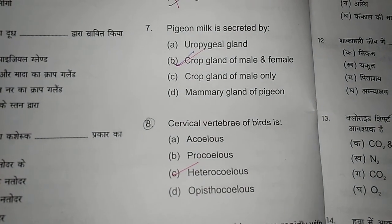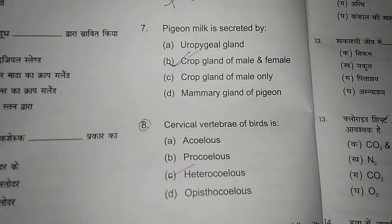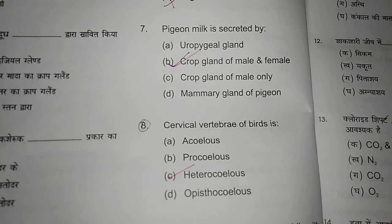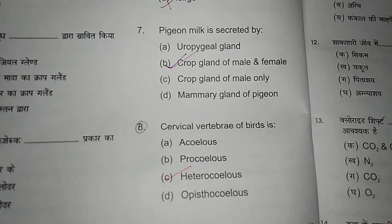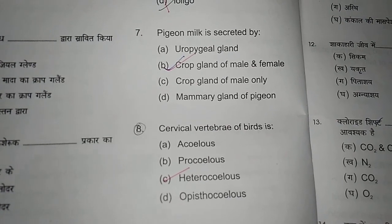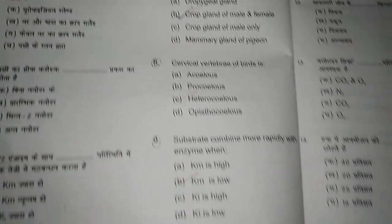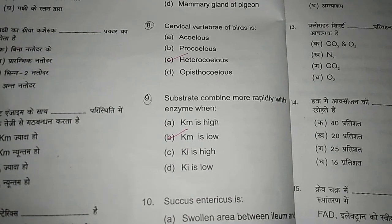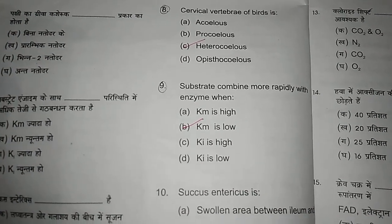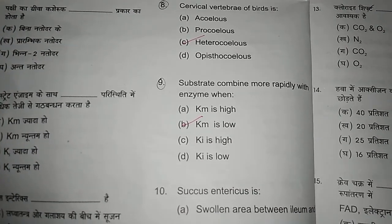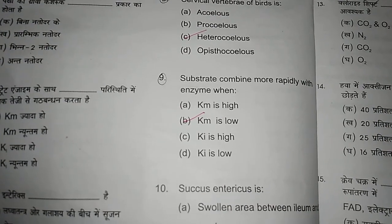Question eight: cervical vertebrae of birds. The question asks about what type of cervical vertebrae is present in birds. The right answer is heterocoelous.